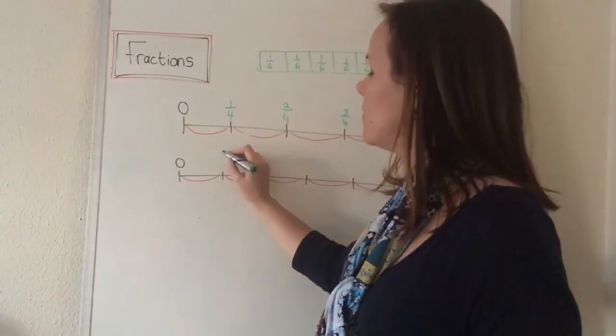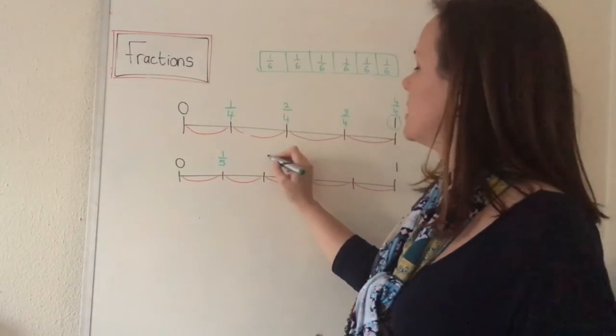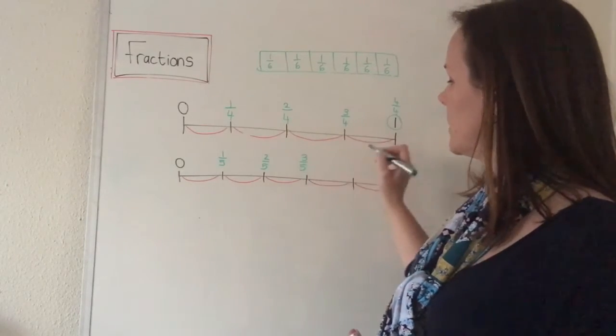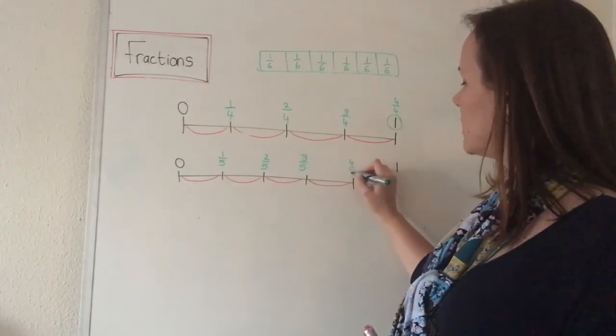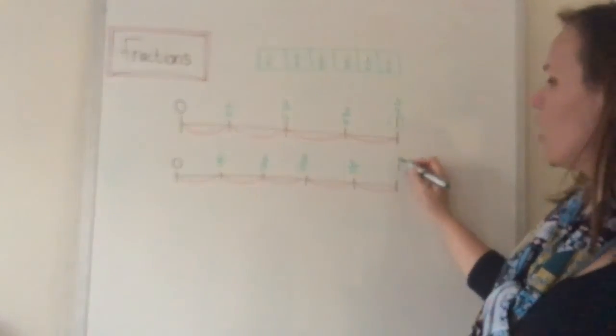So over here the first line will be one fifth, then two fifths, then three fifths, then four fifths, and then five fifths, which is one.